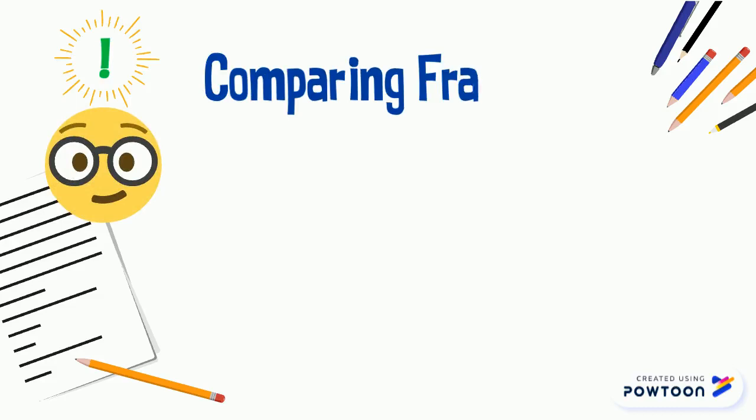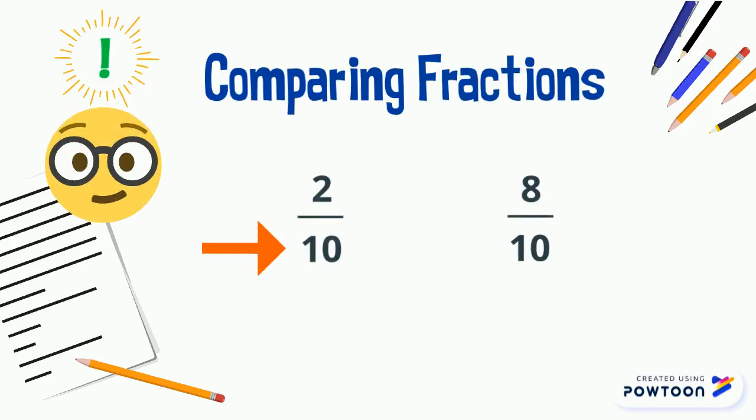When comparing fractions, we can use the example of two-tenths and eight-tenths. The bottom number is ten on both sides. When that's the case, we can look at the top two numbers: two and eight. Eight is larger than two.